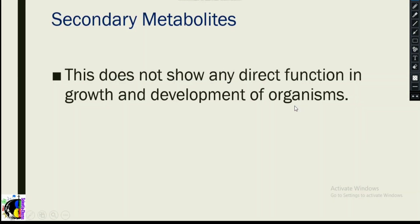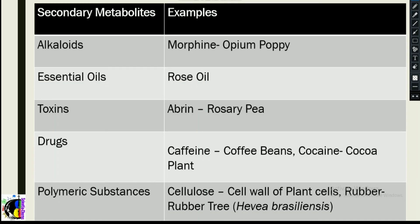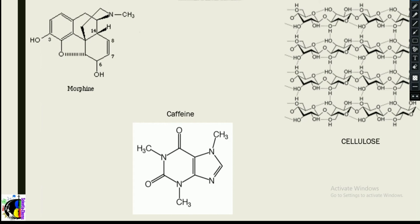That's why secondary metabolites don't show any direct function — they are compounds simply produced by plants. These compounds are produced for various purposes. The chemical structure of morphine is produced by opium poppy. Cellulose is present in plant cell walls, and caffeine comes from coffee beans.